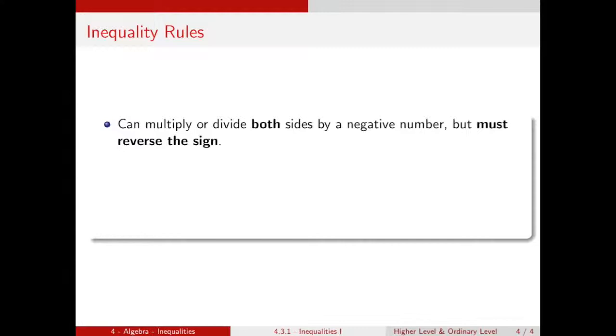And then lastly, this is the one you need to be careful of, you can multiply or divide both sides by a negative number, but you must reverse the sign. So for example, 6 is less than 8, we can multiply both sides by minus 1, but now we must flip around the inequality sign, so less than becomes greater than, and we end up with minus 6 is greater than minus 8, which is true because minus 6 is to the right of minus 8 on a number line.